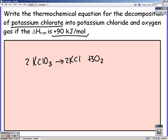So 2, 2, 3 and it says that delta H is positive 90 which tells us it's endothermic and so it should be as a reactant. That's our thermochemical equation.